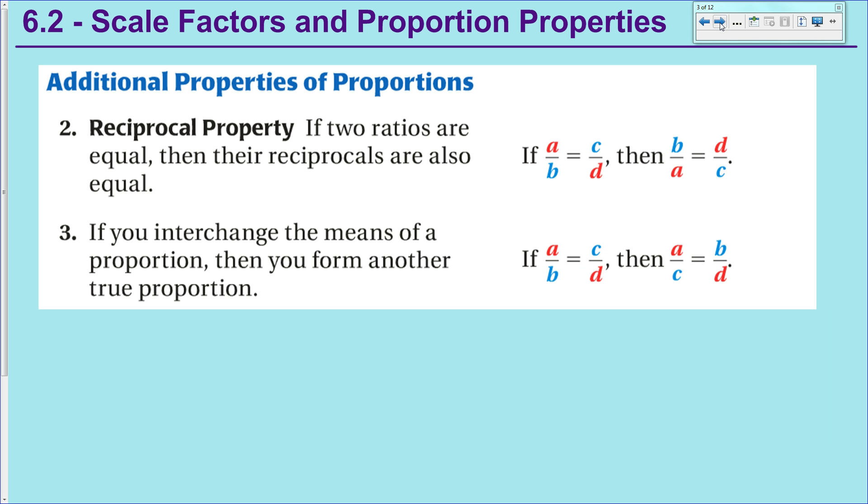The second property is if you interchange the means of a proportion, then the proportion is still true. So you can see here that the B and C have switched positions, and it works out so that that is still a true proportion. And you can prove that to yourself by still doing the cross-products method, and you should get the same result.